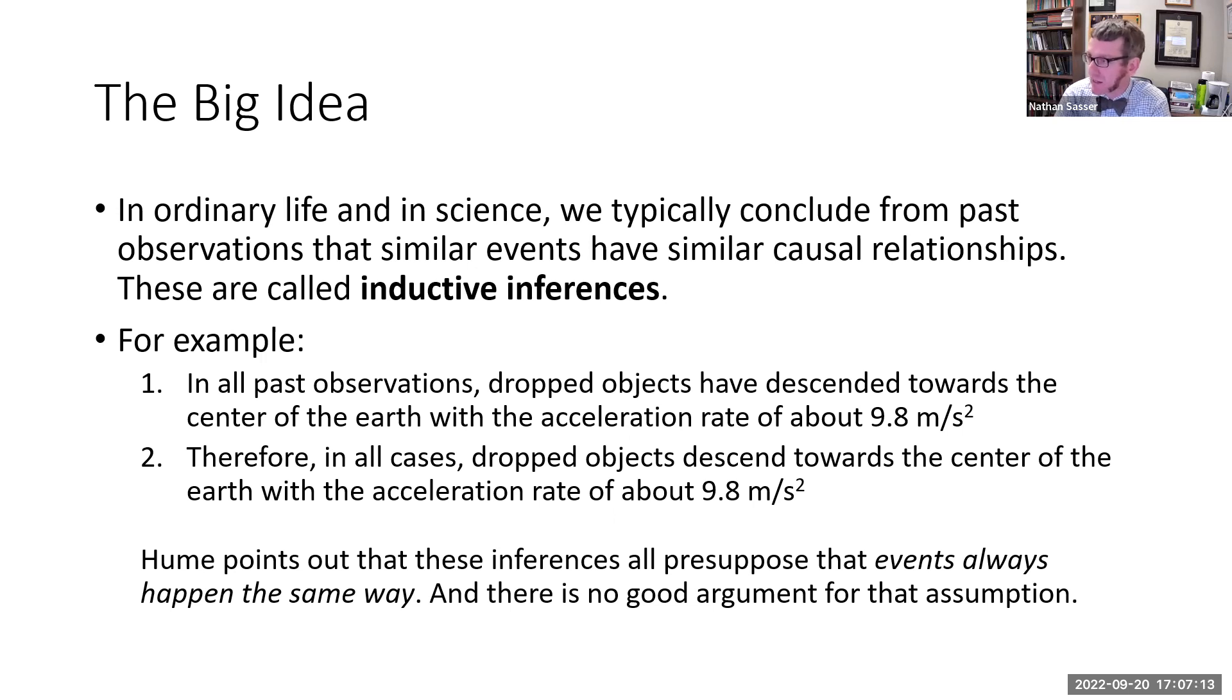Now Hume's basic insight is this: All of those kinds of inductive inferences presuppose that events always happen the same way. Unobserved events happen the same way as observed events. But Hume points out that there is no good argument possible for that assumption. And that seems to raise a skeptical concern about whether these inferences on which all of life and science appear to be built are actually justified. Now Hume gets at this in his own distinctive way. So I'm going to walk you through the text and explain his terms and his lines of argument for this position.